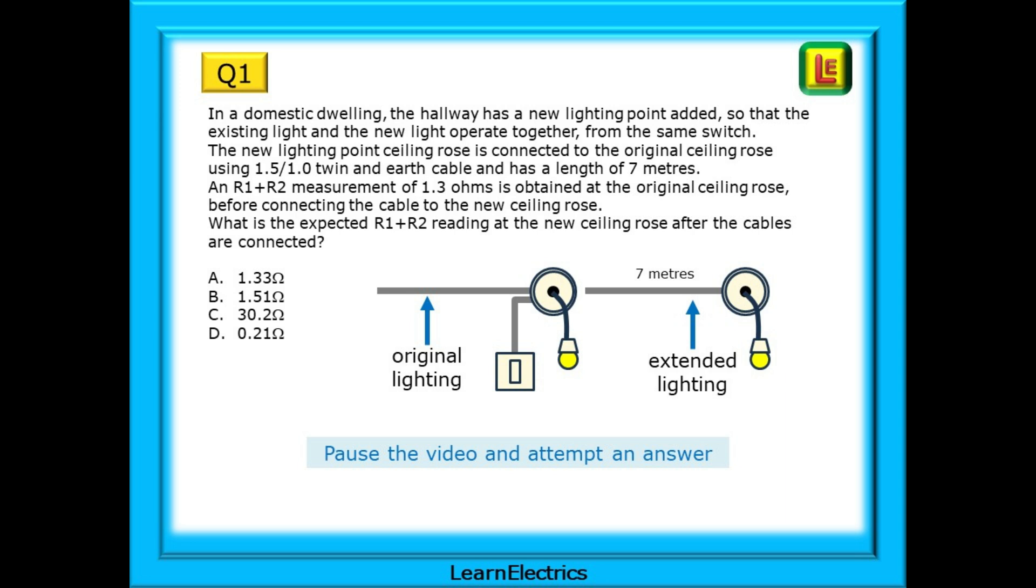In a domestic dwelling, the hallway has a new lighting point added, so that the existing light and the new light operate together from the same switch. The new lighting point ceiling rose is connected to the original ceiling rose using 1.5 by 1 mm twin and earth cable, and has a length of 7 meters. An R1 plus R2 measurement of 1.3 ohms is obtained at the original ceiling rose, before connecting the cable to the new ceiling rose. What is the expected R1 plus R2 reading at the new ceiling rose after the cables are connected?